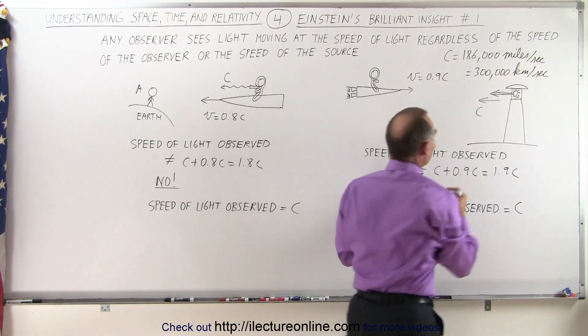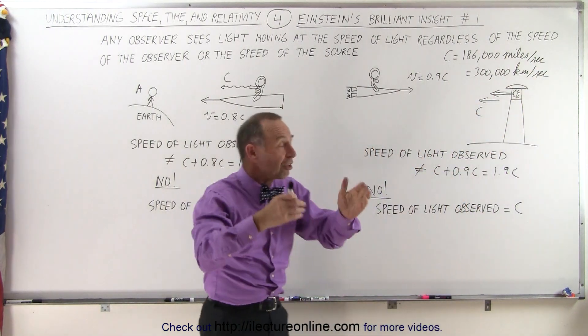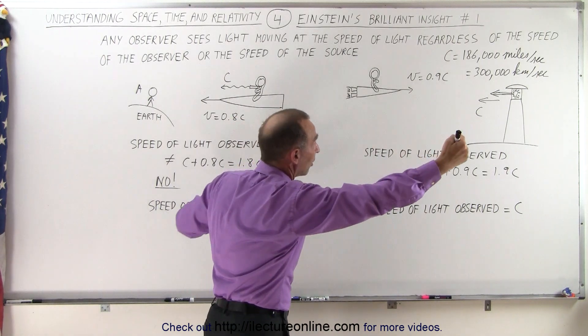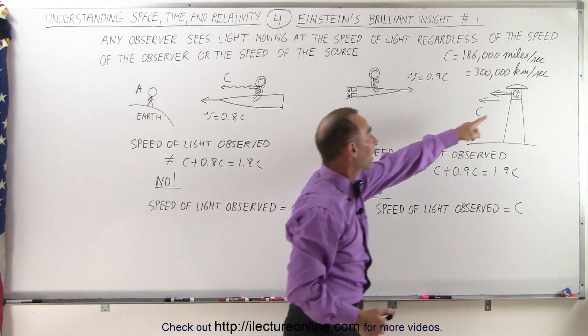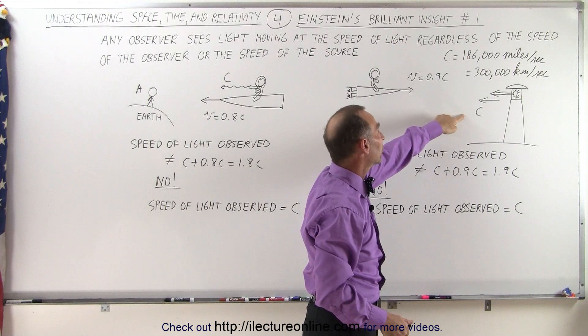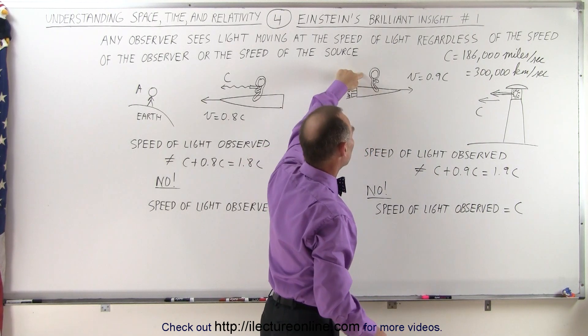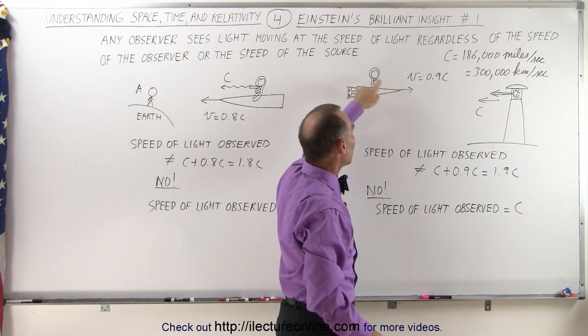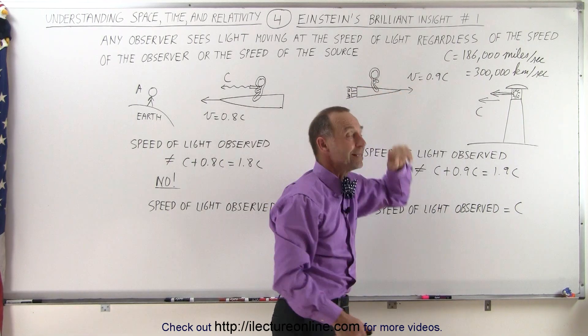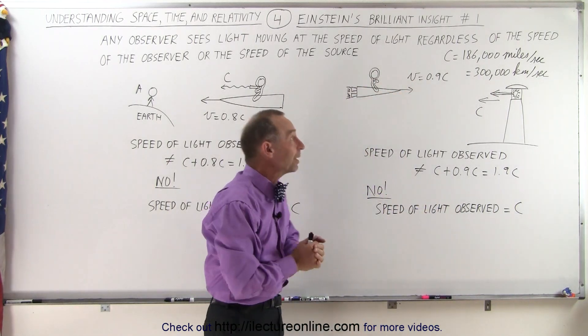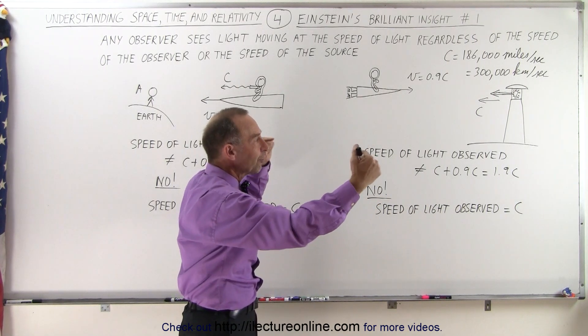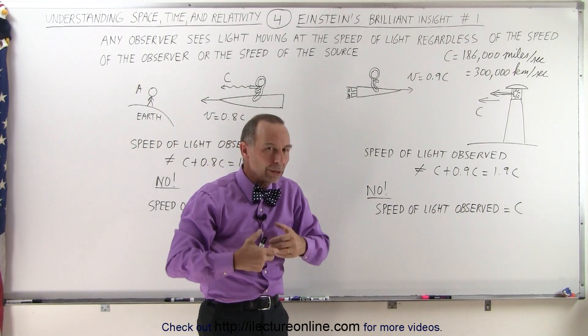So light moves quite fast, and let's say we have a stationary source, like a lighthouse, putting out a beam of light moving at the speed of light, being equal to C. And let's say we have a spaceship going in the opposite direction with an observer, and that spaceship and the observer are moving at 0.9C, meaning 90% the speed of light, so they're approaching the light coming towards them from the opposite direction.